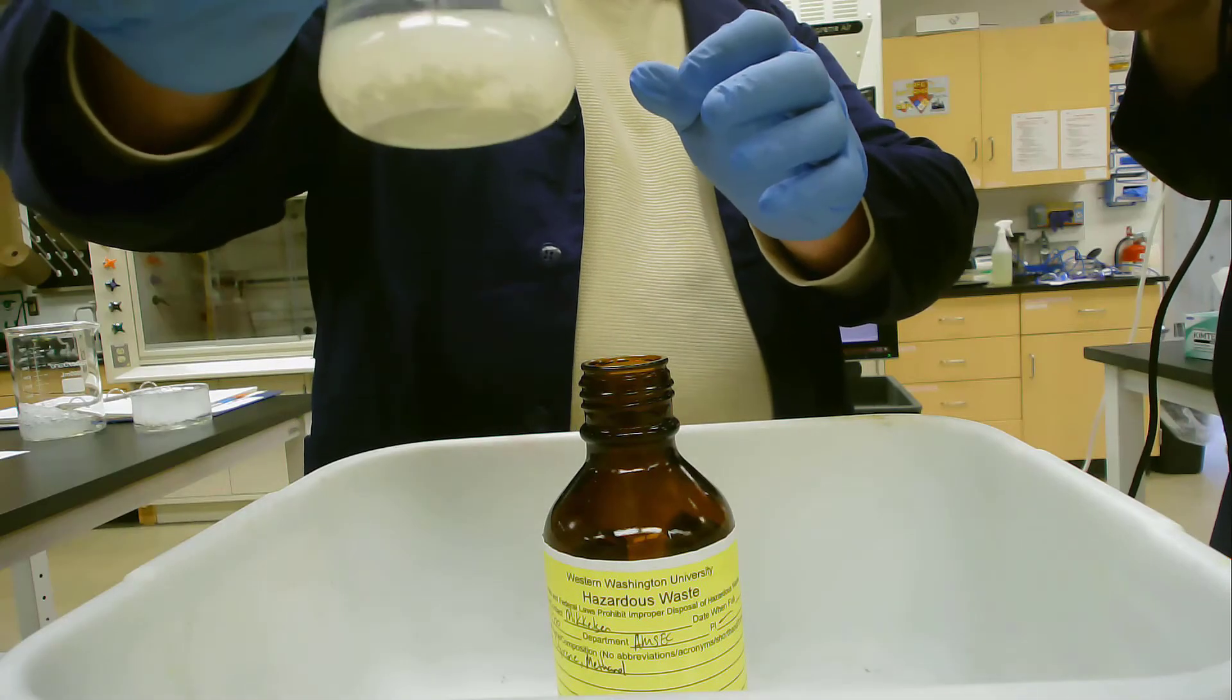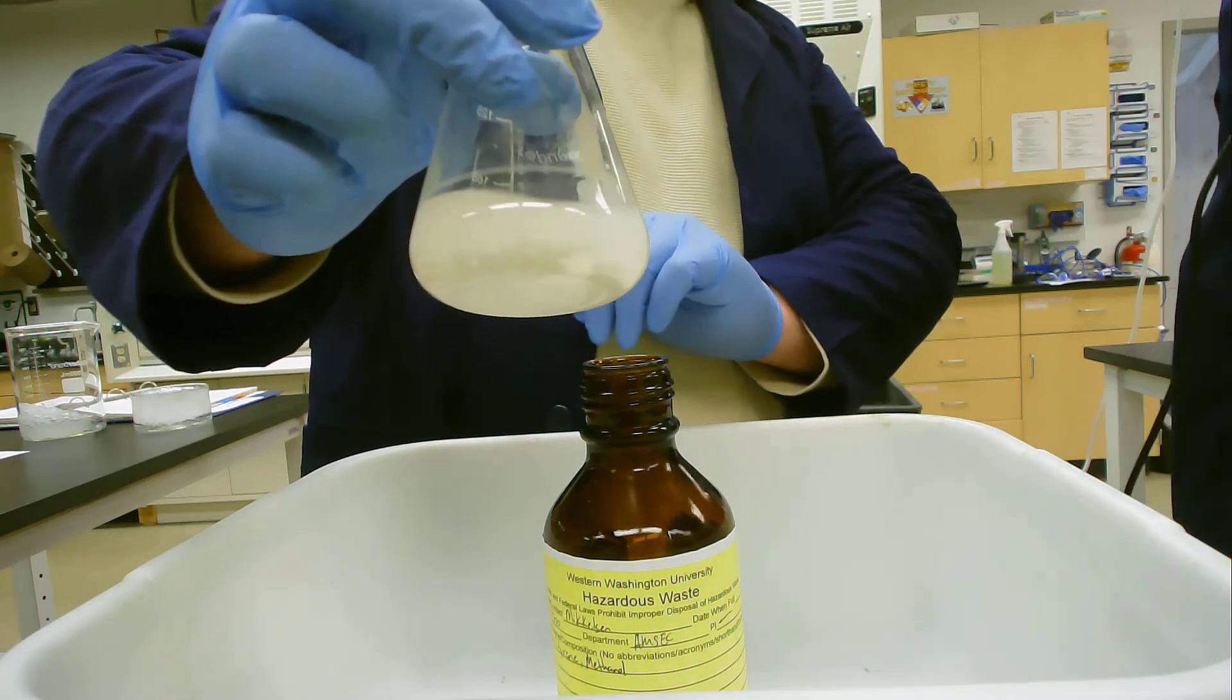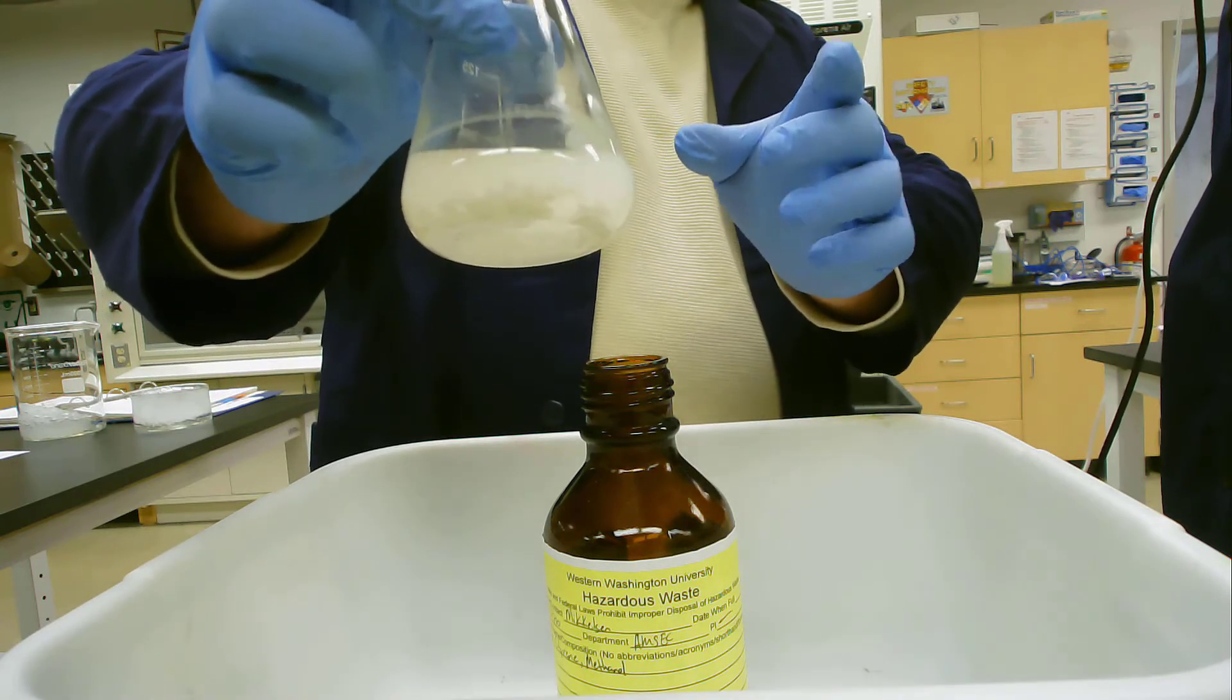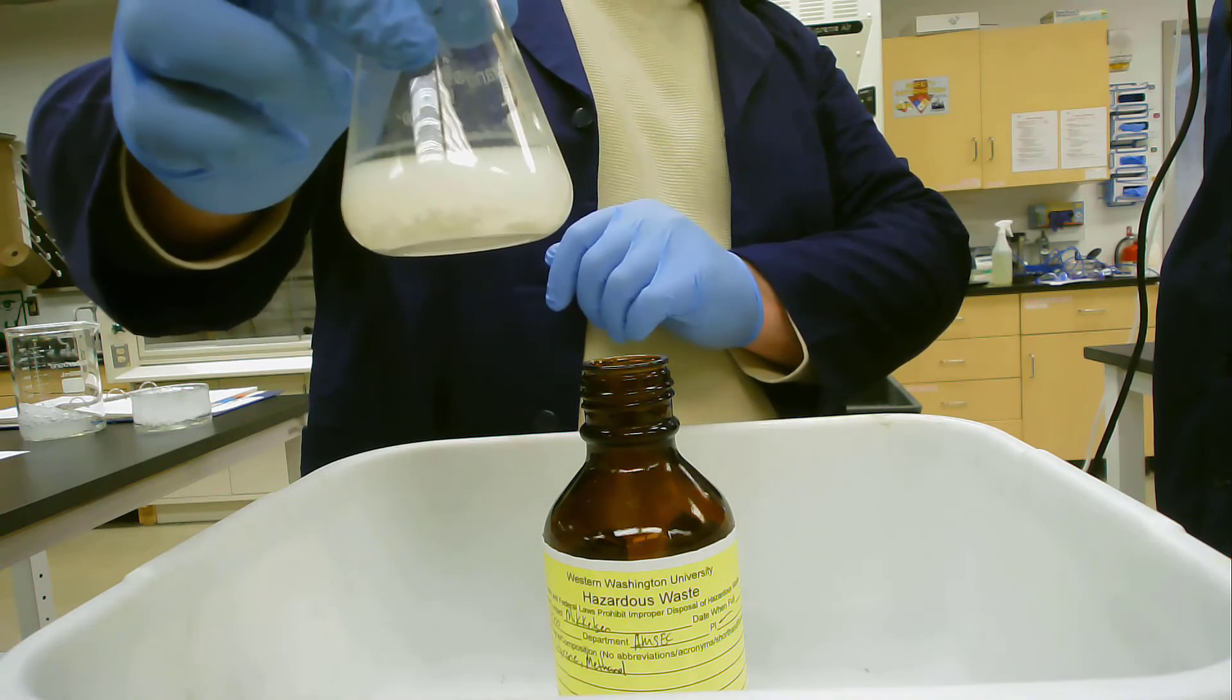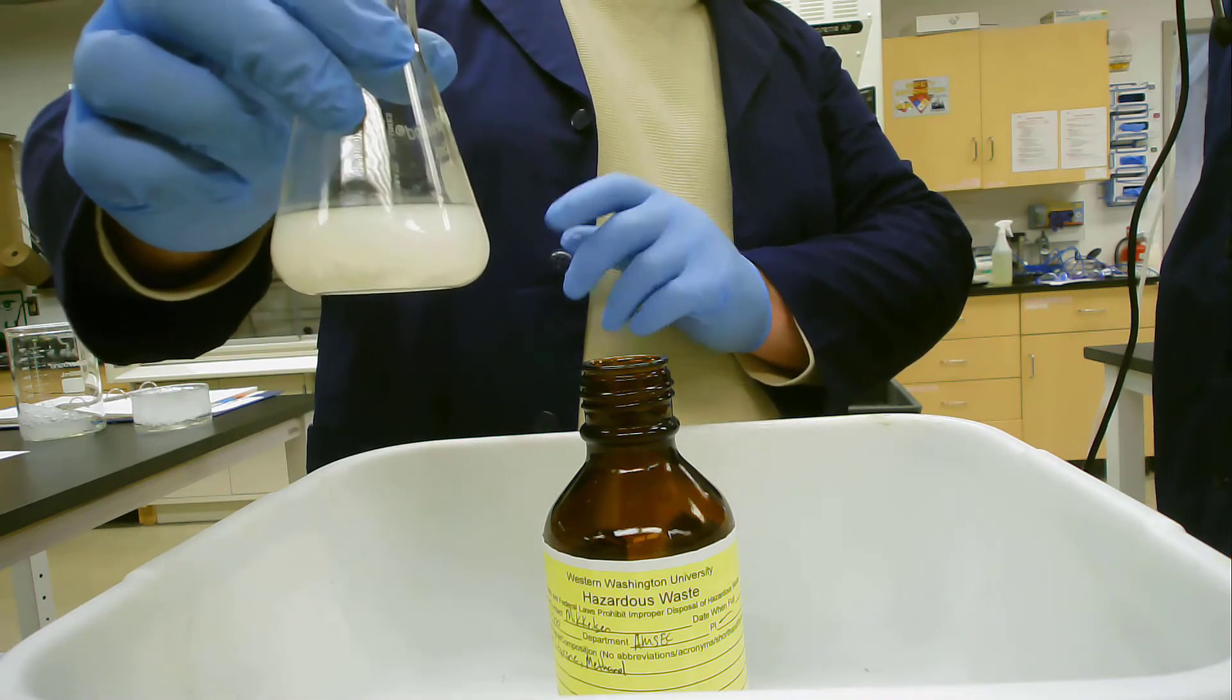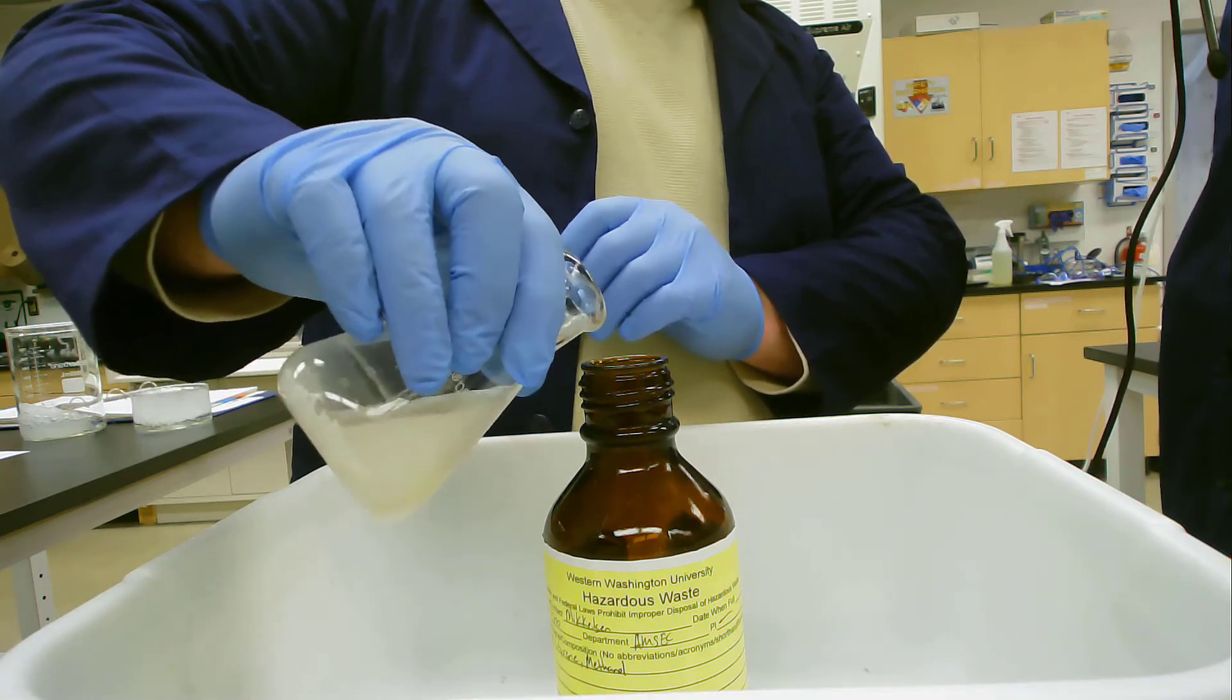Alright, so now we're going to decant our solution that you've previously seen us drip our polystyrene into. You can definitely see there's a sort of larger precipitate on the bottom. That is our desired product.